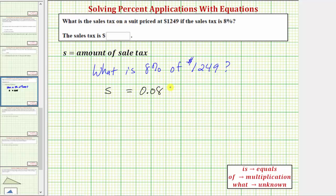This will give us the decimal 0.08 for 8%. And then we have of $1,249, and therefore we have times 1,249. Notice how to find the percent of a number, we convert the percent to a decimal and multiply.